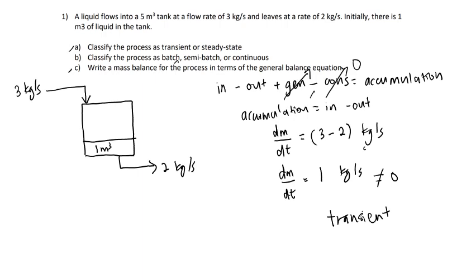For question B, classify the process as batch, semi-batch, or continuous. In this tank, liquid is continuously being fed and continuously being withdrawn from the tank. Thus, the process is a continuous process.